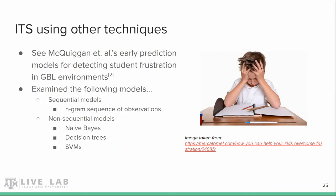The last paper we're going to discuss is from McQuiggan et al., where they implemented several early prediction models for detecting learner frustration. Identifying learners' emotional states could be really useful when determining when game systems should provide assistance and what kind of assistance to provide, which can be seen in Crystal Island. In fact, this research is related to Crystal Island and was used for part of the player state model in that game. Some of the models used in the paper were a sequential model based on n-grams — like those used in natural language processing — and non-sequential models including naive Bayes, decision trees, and support vector machines.